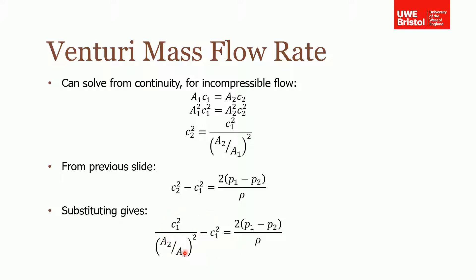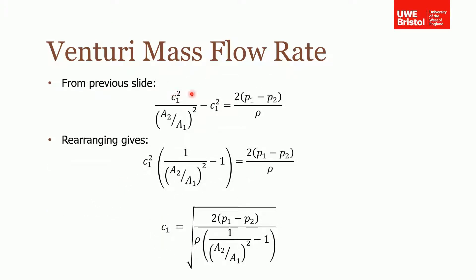So now, assuming that we know the areas and the pressure differential, we can calculate c₁, but we just need to rearrange it to make c₁ the subject. So this is what we had on the previous slide. So taking c₁² out of the brackets and then dividing all through by that and square rooting, we can find out this expression for c₁. Now it looks quite a complicated formula, but essentially it's just been distilled down from Bernoulli's and continuity.